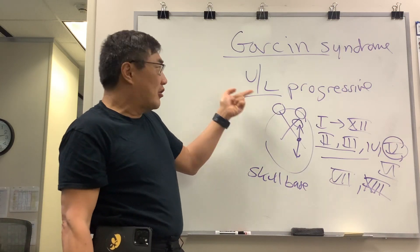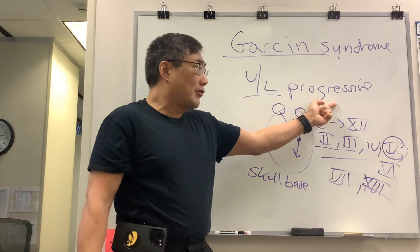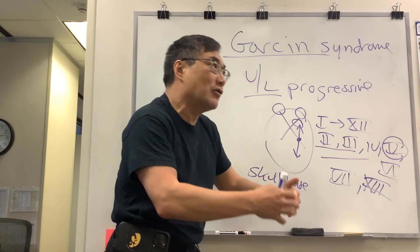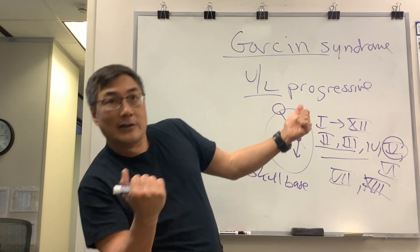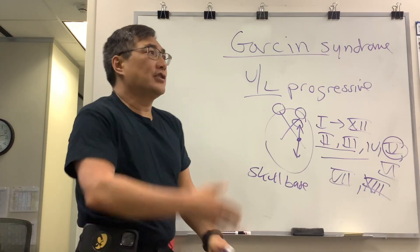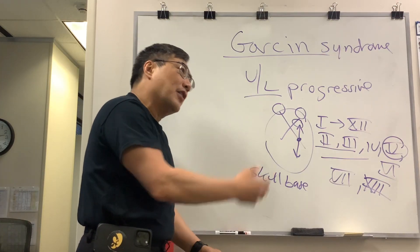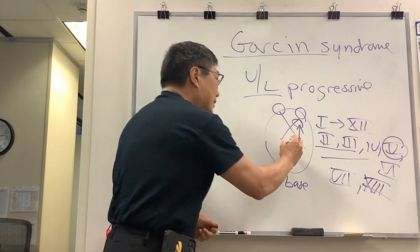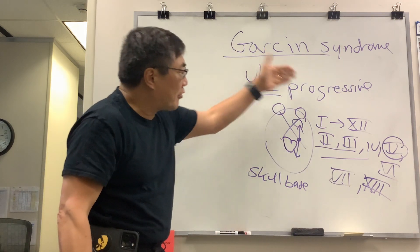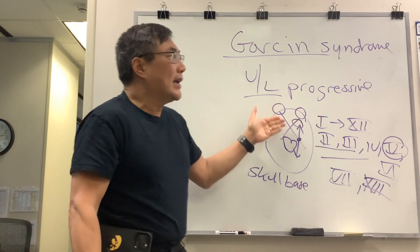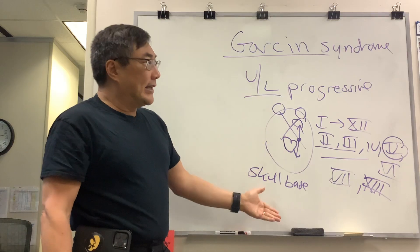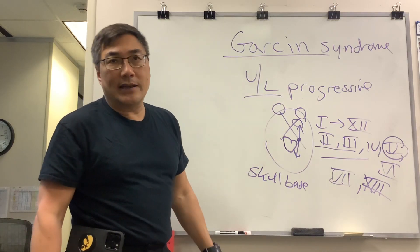The key differentiating features are: it's unilateral, it's progressive, it jumps from one cranial nerve to the other in a sequential order — either anteriorly, posteriorly, or both — and it doesn't have any long tract signs. So there's no brainstem involvement, no involvement of the pons, they're not weak. It's just ipsilateral, progressive, unrelenting, sequential cranial neuropathies on the same side. You need to image it, of course, and the name of that thing is Garson.